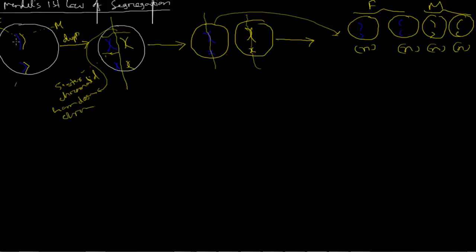The first set was blue for father and yellow for mother, so ultimately you find exactly pure father and mother chromosomes. That is why it is called segregation, and that is what Mendel's first law of segregation states. According to this law, you will find 50% of gametes exactly like the father and 50% exactly like the mother.